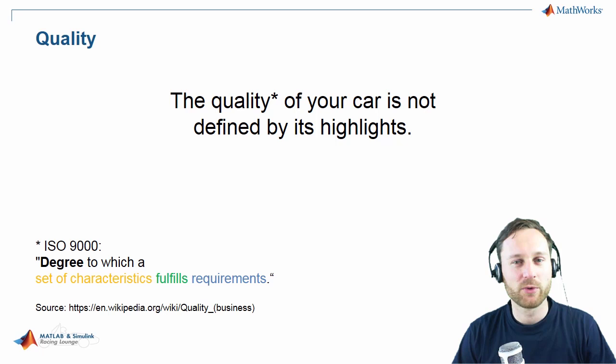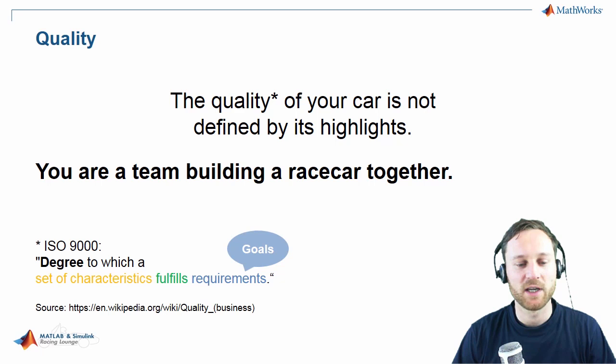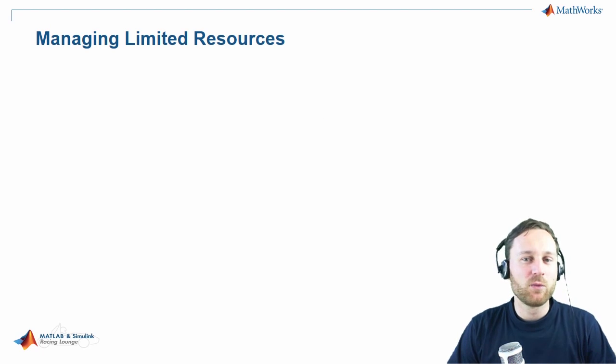Quality is a certain degree that fulfills requirements. Set of characteristics is your car. It's not the individual solutions, it's the full car. And requirements, you can recall that. We talked about goals. And finally, this concludes to me to the following statement. You're one team building a race car together. And what definitely matters is teamwork. And as I said, it's not the highlights. It's the sum that matters. Sometimes we see very inhomogeneous cars. And at the end, this will not be reliable. Or at least you have a certain risk.